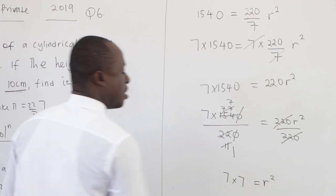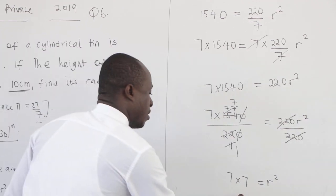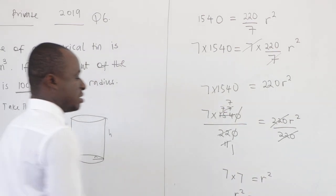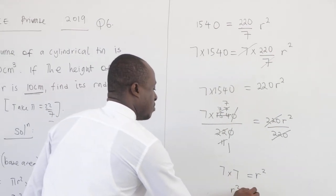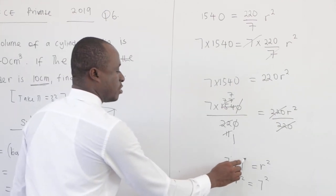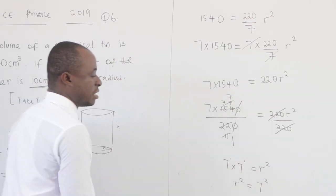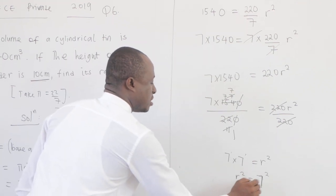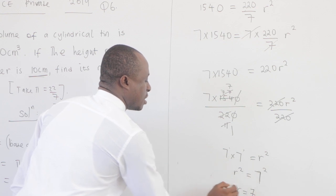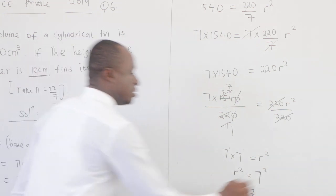Now r² is the same as using indices. 7×7 is the same as 7², which is to the power 2. The bases are the same. When the exponents are the same, you equate the bases. Clearly r is 7.